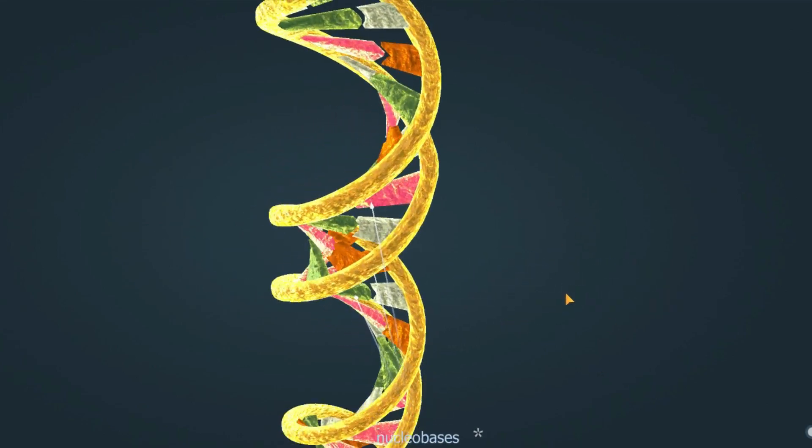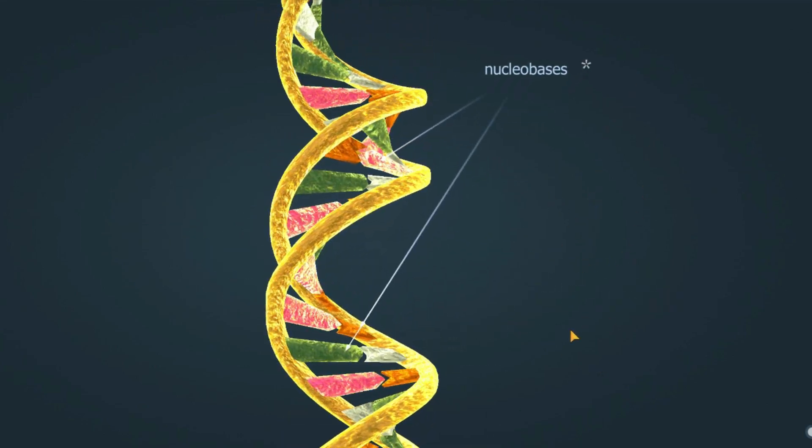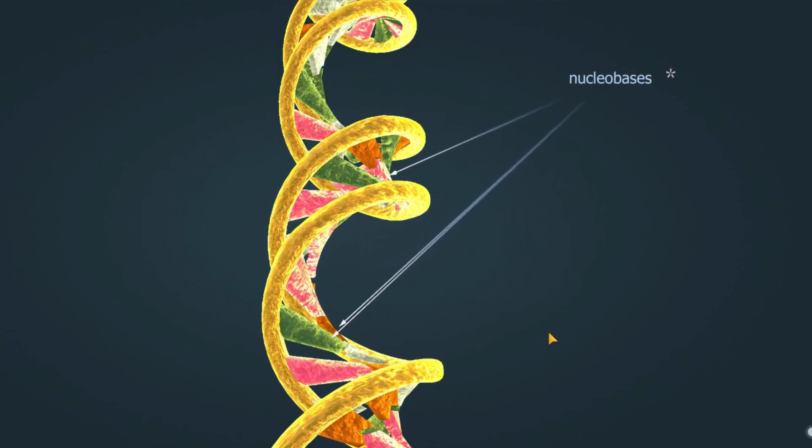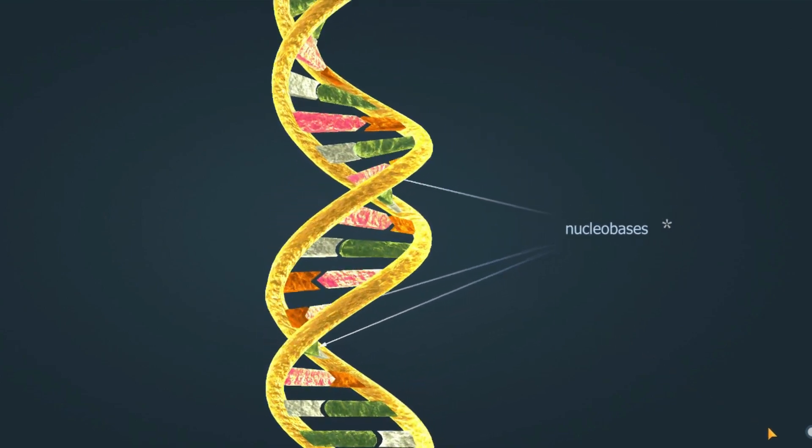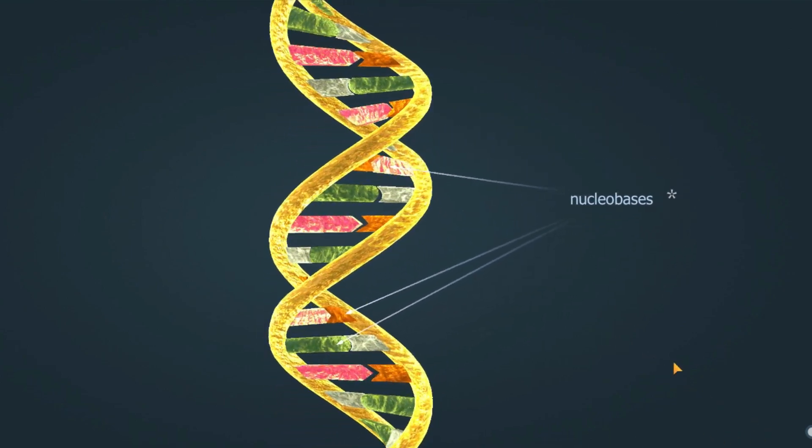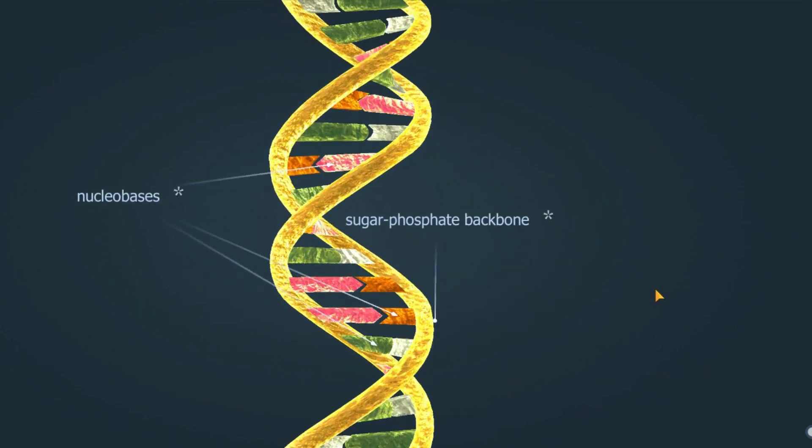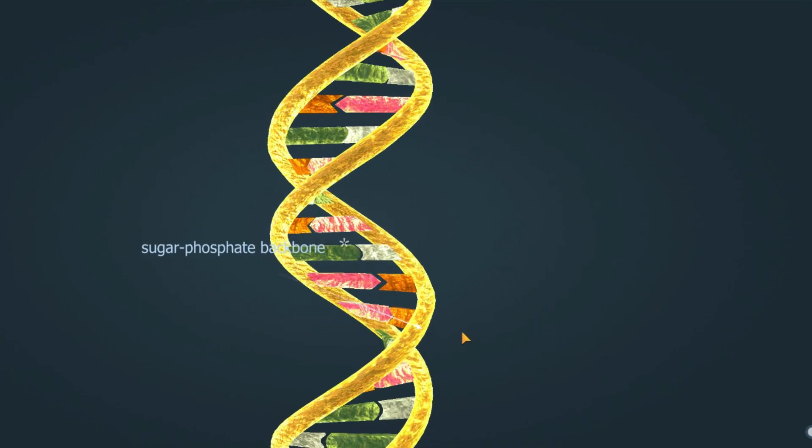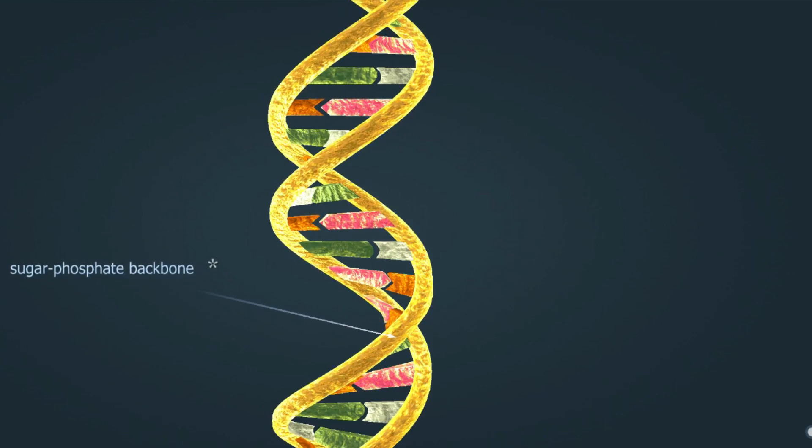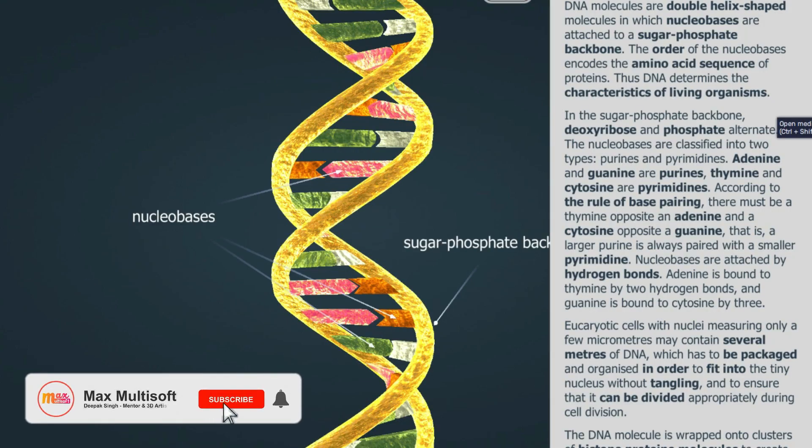DNA molecules are double-helix-shaped molecules, in which nucleobases are attached to a sugar-phosphate backbone. The order of the nucleobases encodes the amino acid sequence of proteins. Thus, DNA determines the characteristics of living organisms.